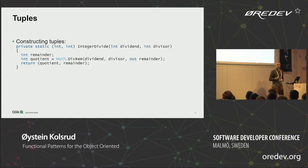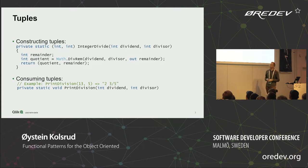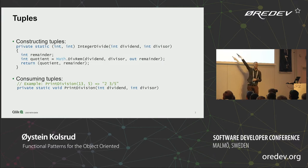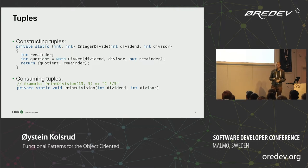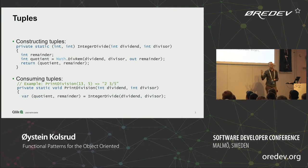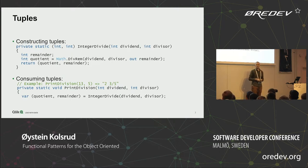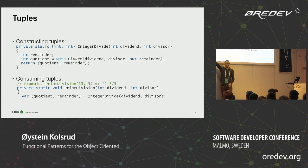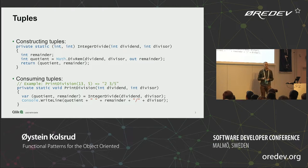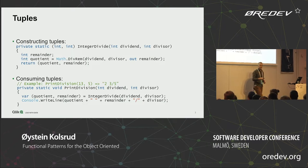The interesting part comes when you want to use these values. If we write a function like printDivision that calls DivRem and prints the result, we can immediately deconstruct that tuple as we call the function. Instead of assigning the result to a variable and then accessing its individual components, we can assign it directly to a tuple and immediately get handles to those members. It's really nice syntactic sugar, and I'll show you examples of how this is used in Haskell later on.